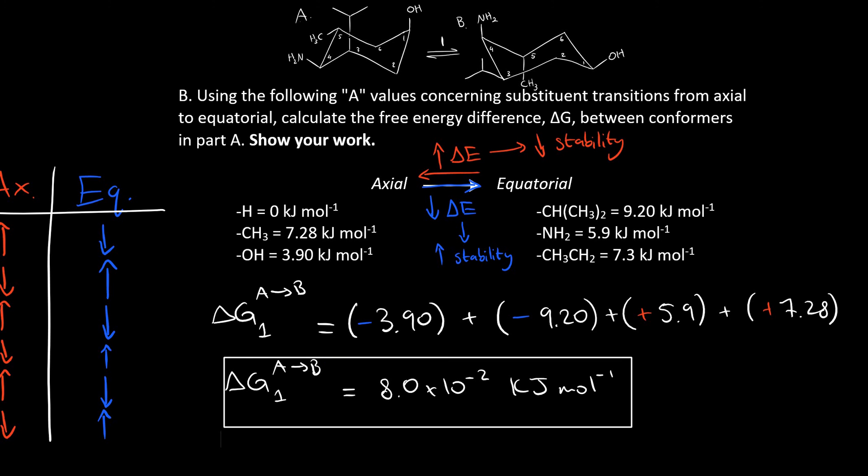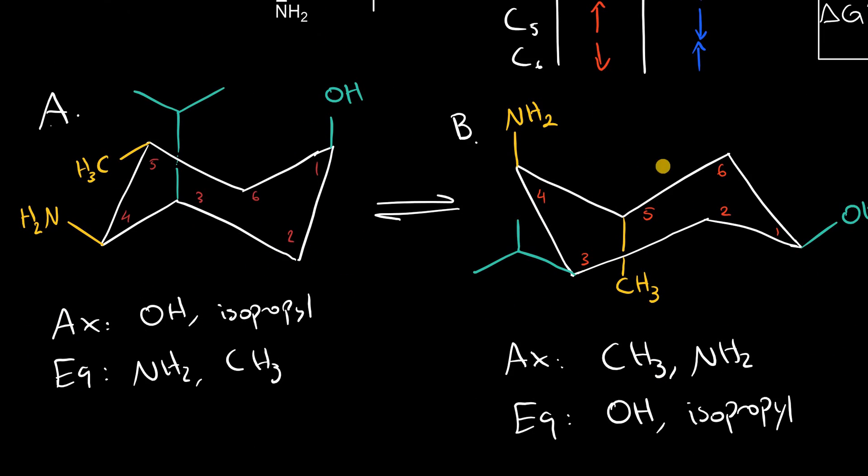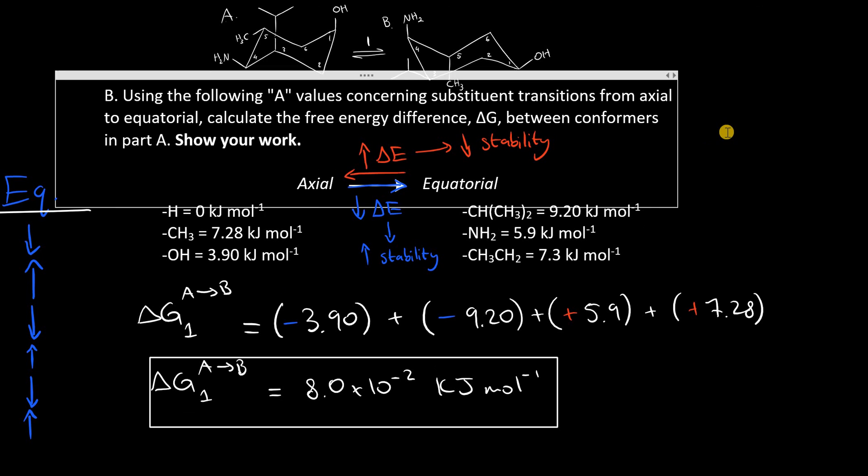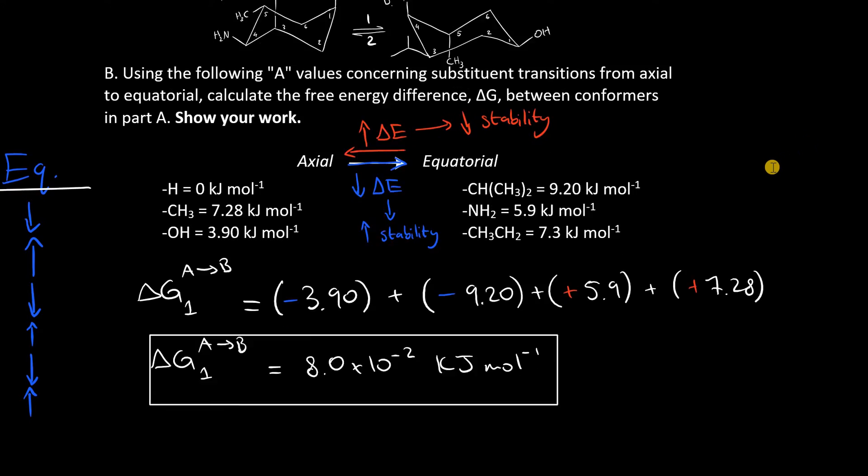But we still don't know which one is the more stable compound, right? Because we were asked here in part one to circle the more stable conformer. And I chose such a fantastic example. So in order to prove that, we need to look at reaction two going from B to A and see what value we get with delta G.